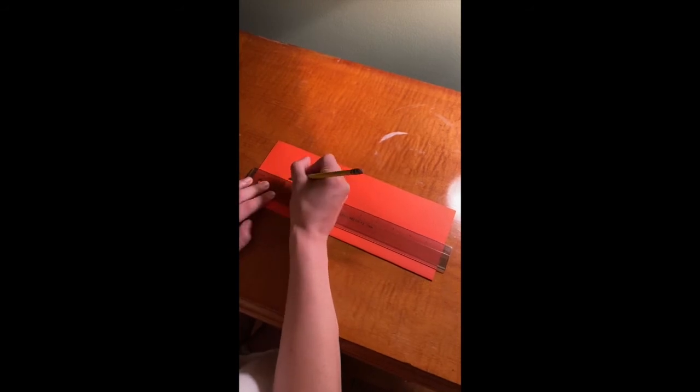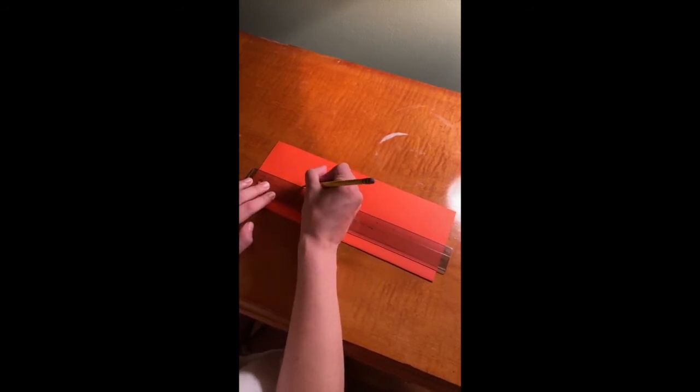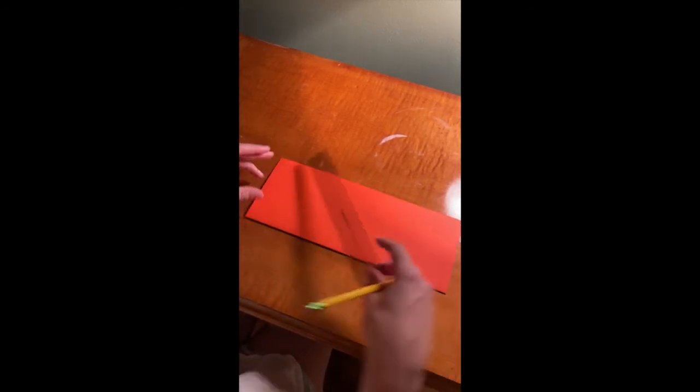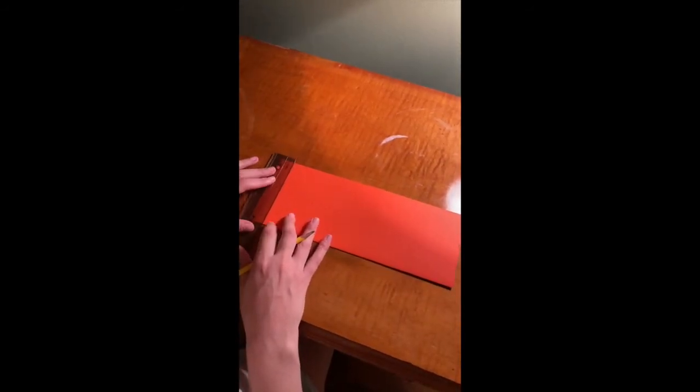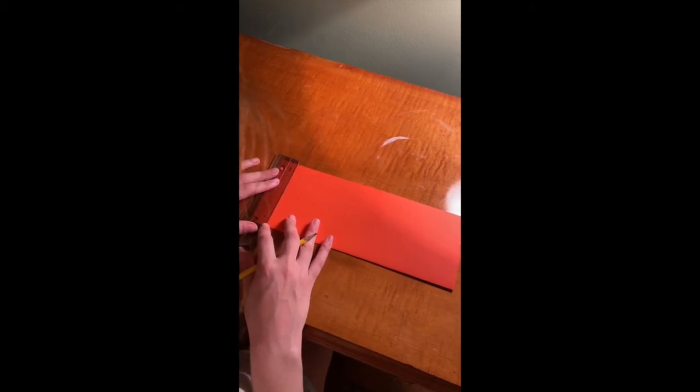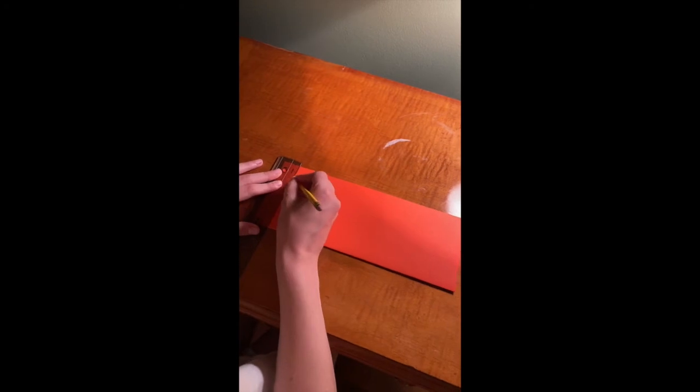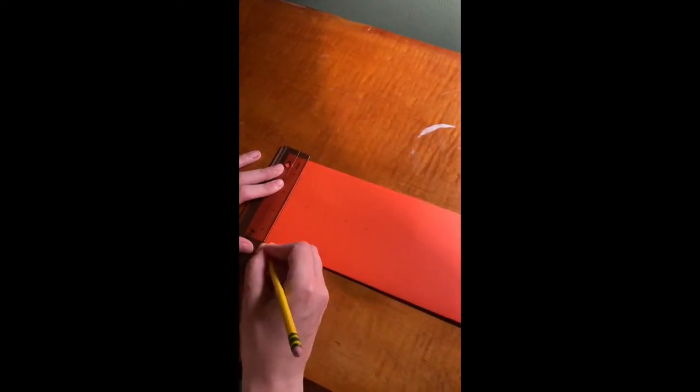With a ruler, place a dot at every inch mark from the left edge of the paper. Place the edge of the ruler on the first dot and draw a line an inch down from the opened end to the folded edge.